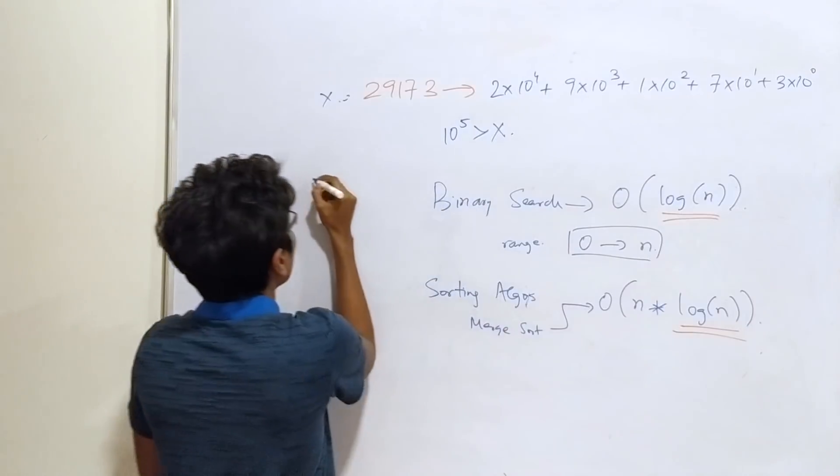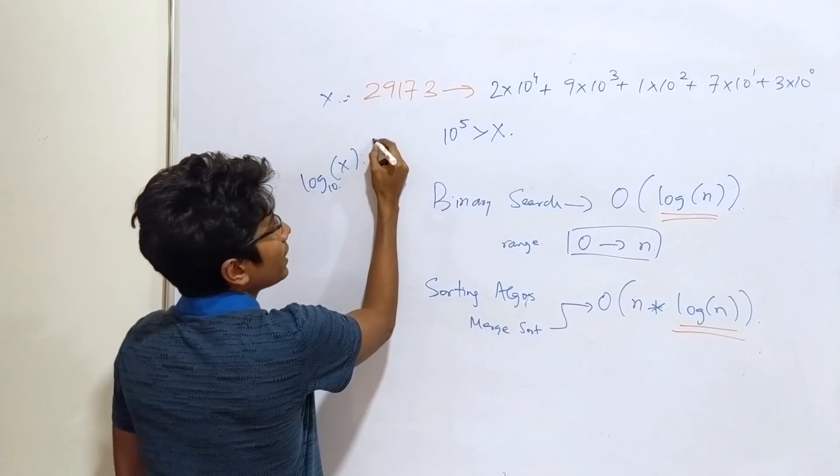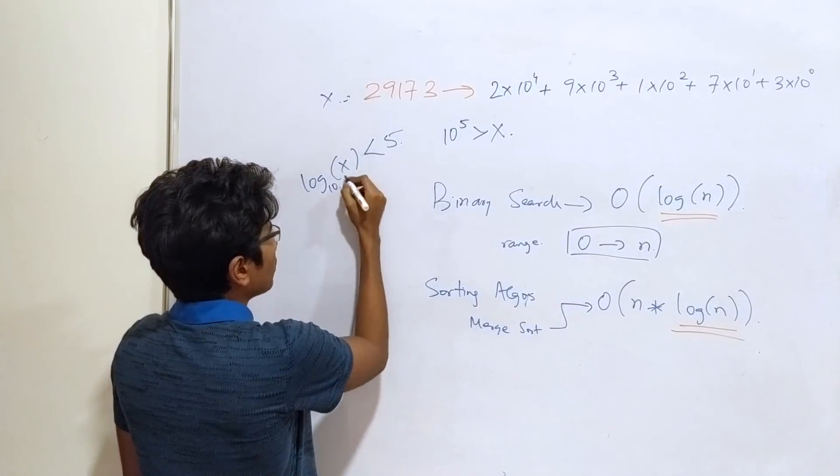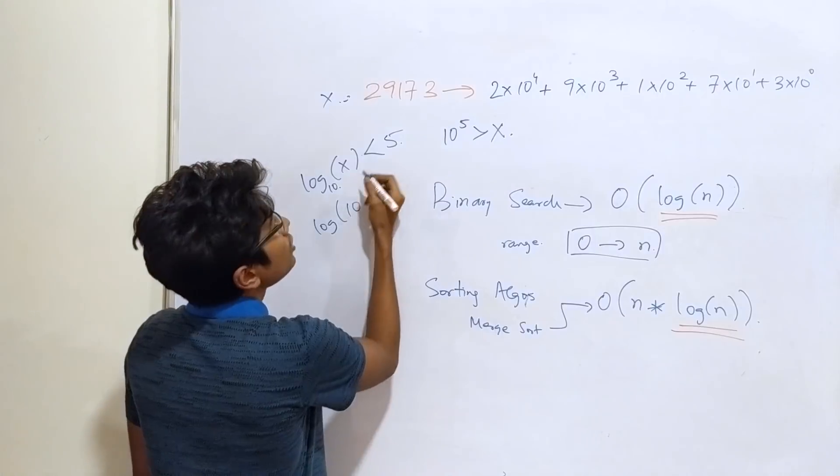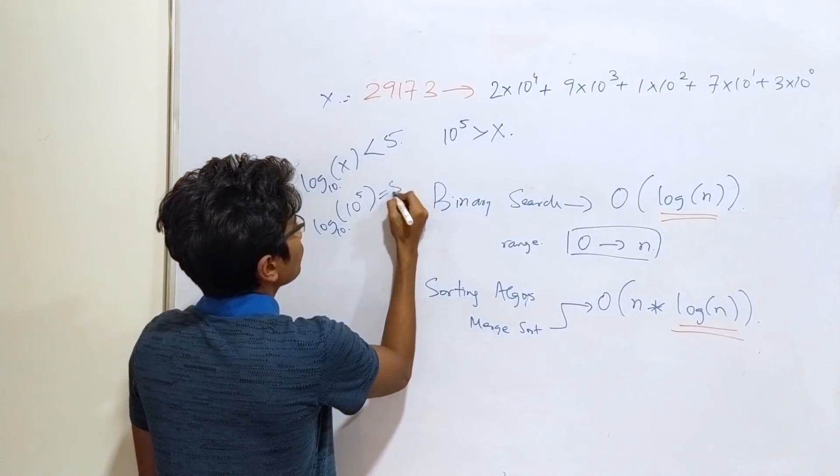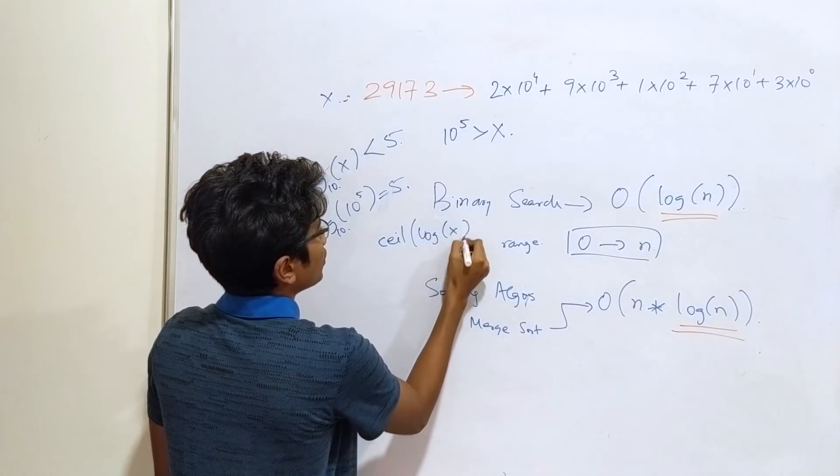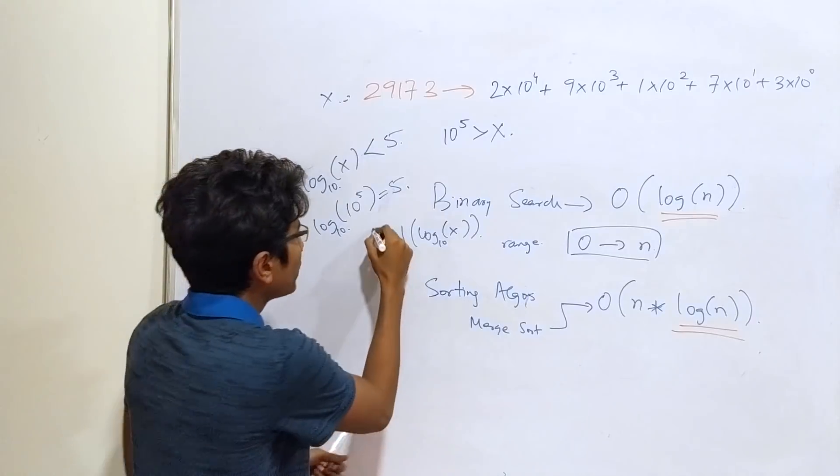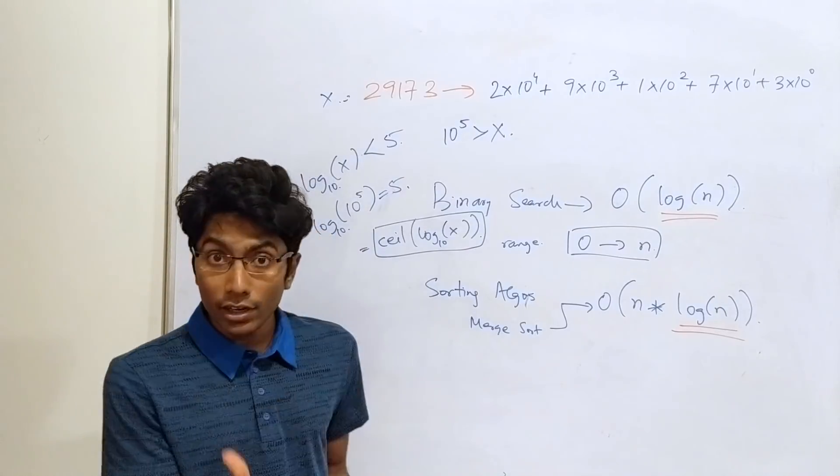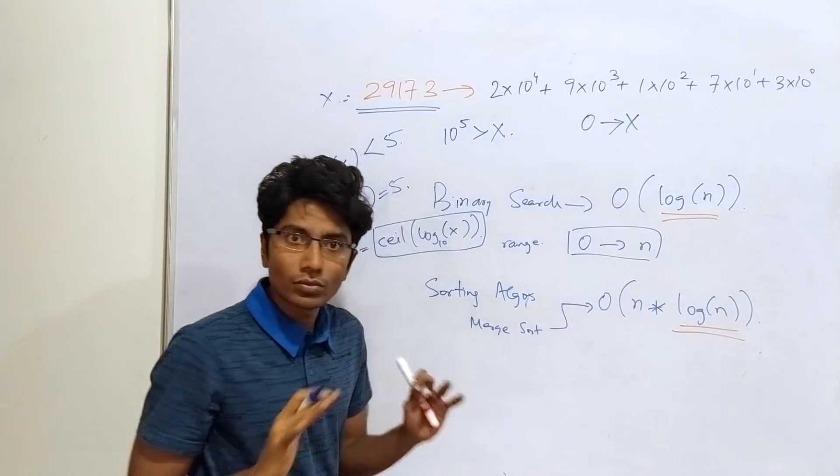So, if I take log of x to the base 10, this is going to be less than 5. And so slightly greater than x which is log of 10 raised to the power 5 to the base 10 is equal to 5. And what I can then do is I can just say take the ceiling of log of x to the base 10 and what you will have with this thing, this number,